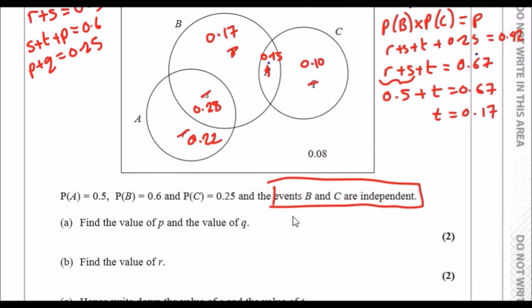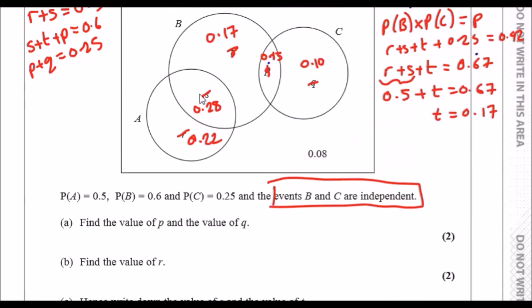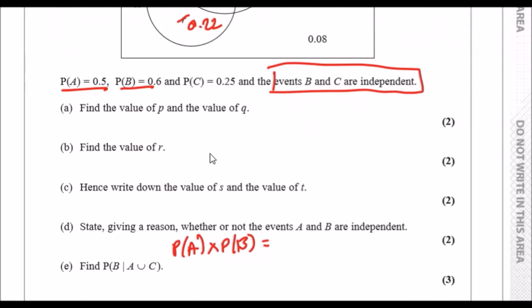So just like the definition for B and C, we need to check if the probability of A times the probability of B will give us 0.28, will give us the intersection point between them. This is the intersection point. Go ahead and smash these two values in your calculator: 0.5 times 0.6, and what do we get? Well, we get 0.30.